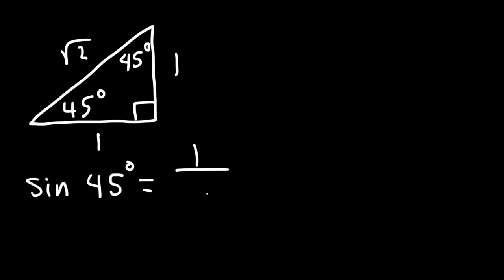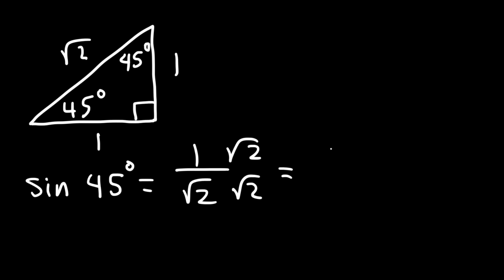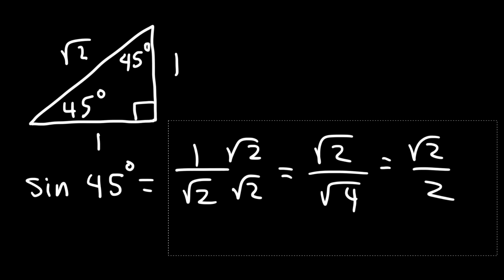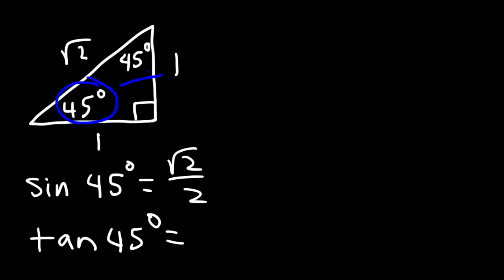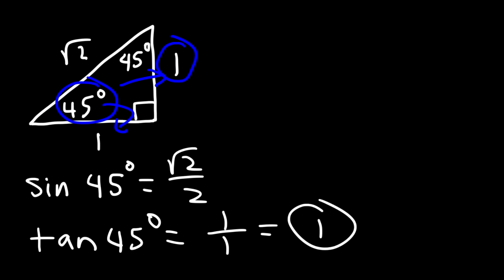Opposite to 45 is 1 and the hypotenuse is the square root of 2. Any time you have a square root in the denominator you need to rationalize it, so multiply top and bottom by root 2: this becomes root 2 over 2, since the square root of 4 is 2. So sine 45 is root 2 over 2, and the same is true for cosine 45. For tangent 45, opposite over adjacent is 1 over 1, which is 1.